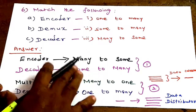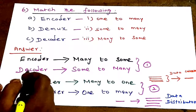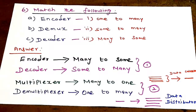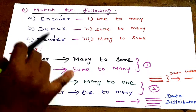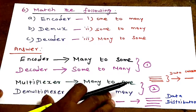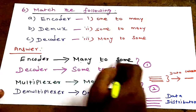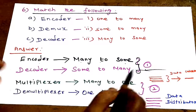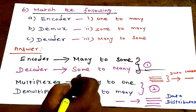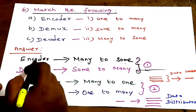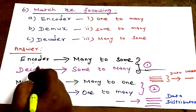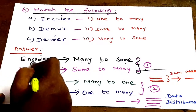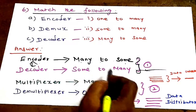Next, NTA NET exam second paper question — match the following: Encoder, Decoder, Multiplexer, Demultiplexer with their functions. Encoder is many-to-few (many inputs to fewer outputs). Decoder is the opposite — few to many. These two are opposite concepts. For example, encoder is many-to-some; decoder is some-to-many.